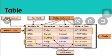Table is the most important object of a database. It is the central concept in a relational database. All data in a relational database is stored in a table. The table is also known as a relation. A database can have many tables stored in it.